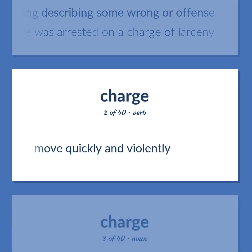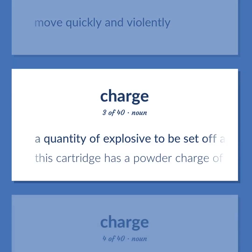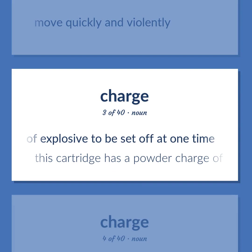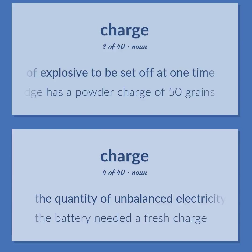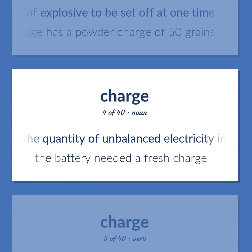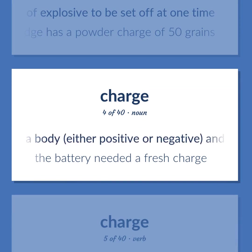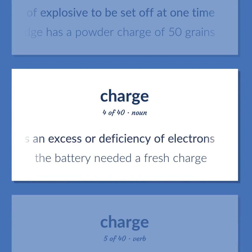Charge: To move quickly and violently. A quantity of explosive to be set off at one time. Example: This cartridge has a powder charge of 50 grains. The quantity of unbalanced electricity in a body, either positive or negative, construed as an excess or deficiency of electrons. Example: The battery needed a fresh charge.